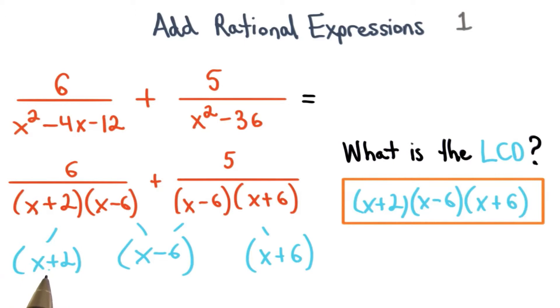The other factor of this denominator is x plus 2 and the other factor of this denominator is x plus 6. Finally, we just multiply all these factors together to get our lowest common denominator right here.